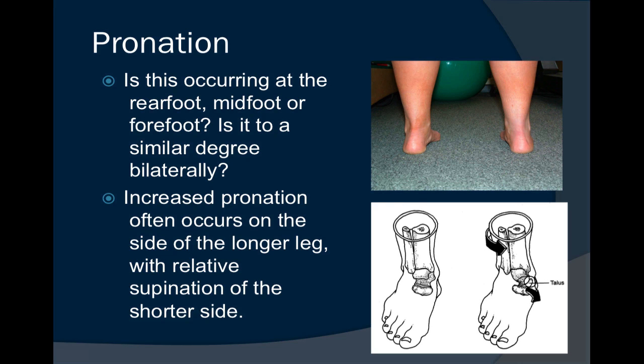Another important concept is that pronation will often — not always, but often — increase on the side of the longer leg, with relative supination of the shorter side. This can occur with anatomical or functional leg length deficiencies and can create disparities or clockwise/counterclockwise rotations within the pelvis, as well as a relative windswept-type biomechanics of the foot where one foot is more pronated than the opposite side.